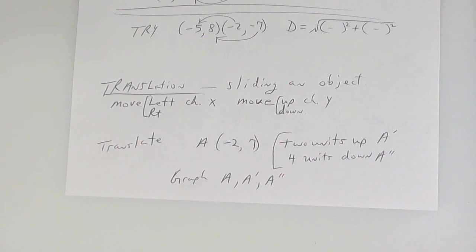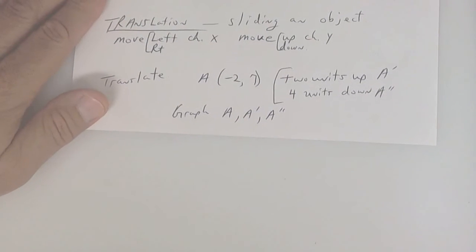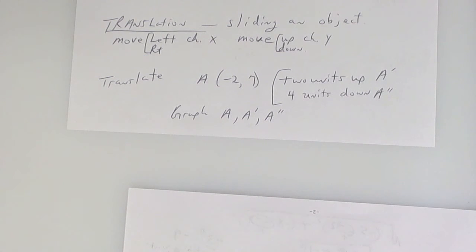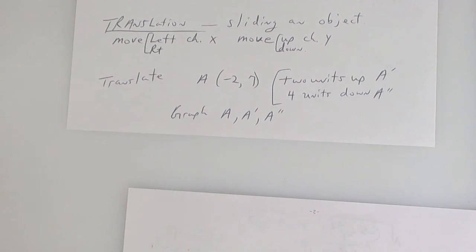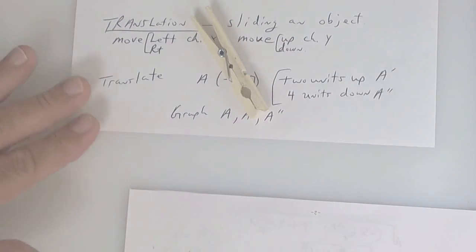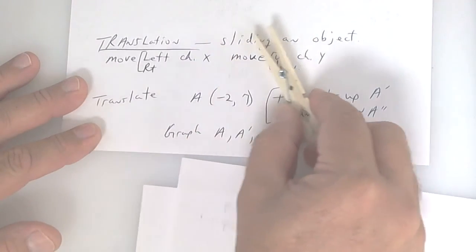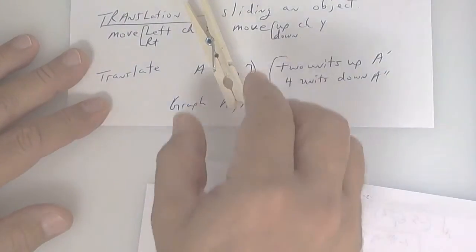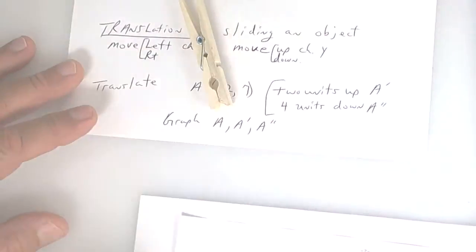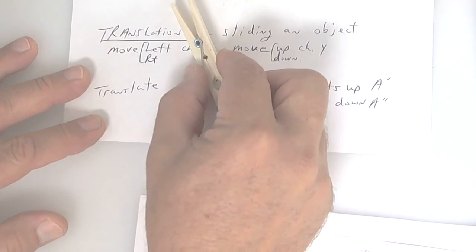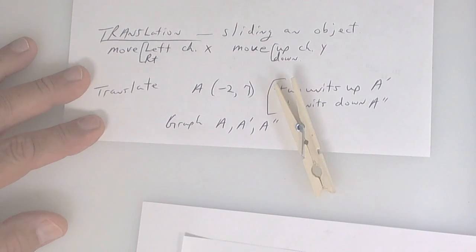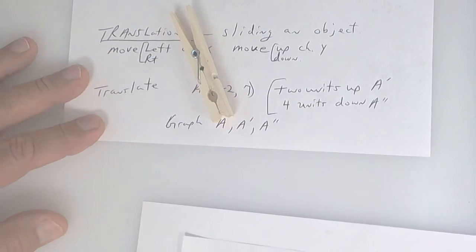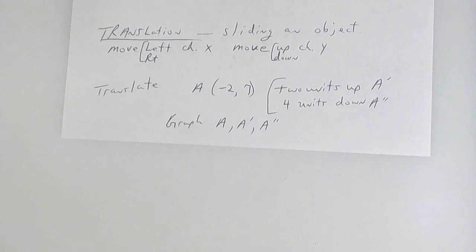Translations — copy down these notes. We had this in section 1.2 but I didn't really cover it, so I need to teach it now. A translation is sliding an object. If you take something and slide it, that's called a translation. For example, with this clothespin: if I slide it two units to the right, that moves the x; two units down changes the y. Moving two units right and two units down together is a translation. The moved object is called the image and the original is called the pre-image.